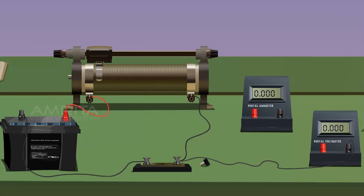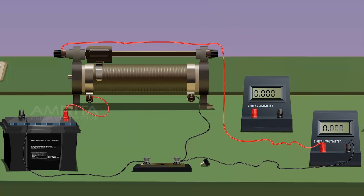The positive terminal of the voltmeter V1 is connected to the upper terminal of the rheostat RH1. The upper end of the rheostat RH1 is connected to the positive terminal of the microammeter.